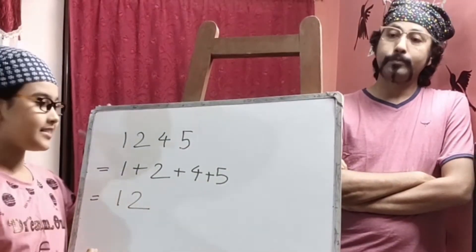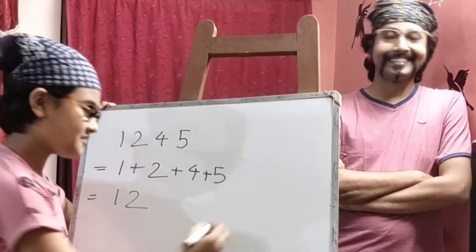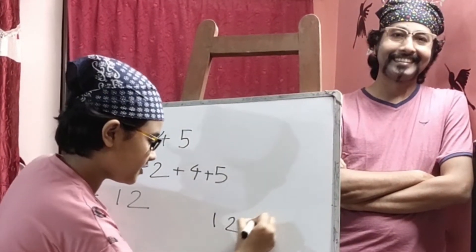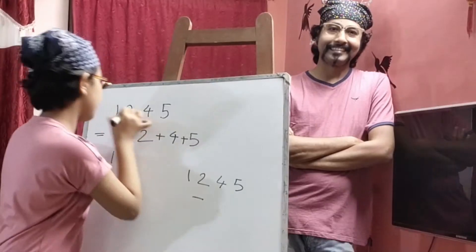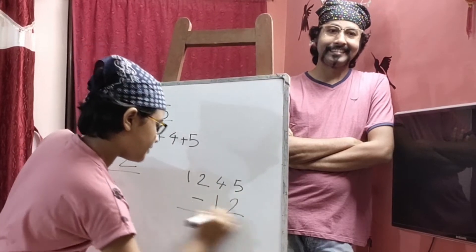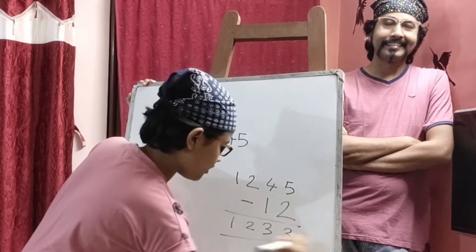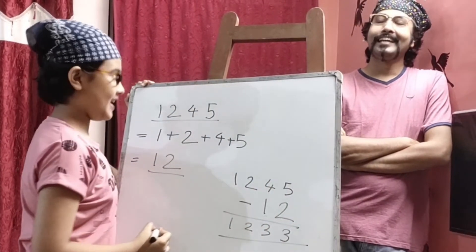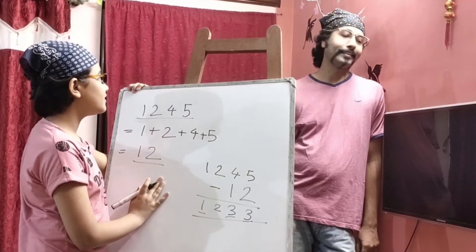Now you have to subtract this number from the first number you have taken. Okay, that's great. So we have to subtract this number and we get this. Yes, we got it. You got it? Yes. How many digits are there? There are four digits.